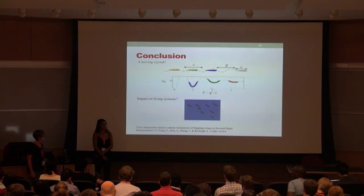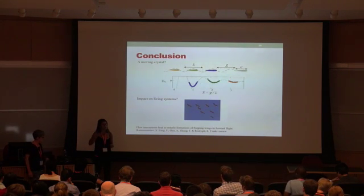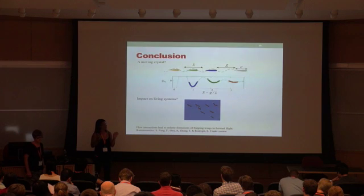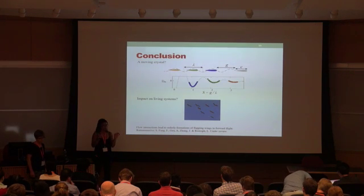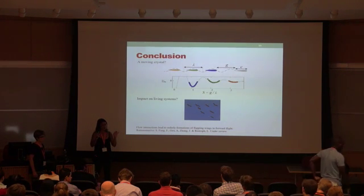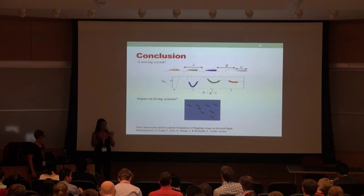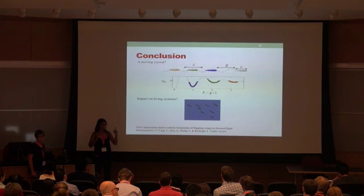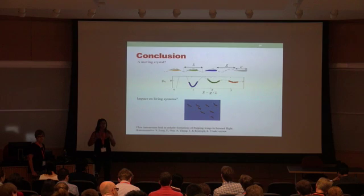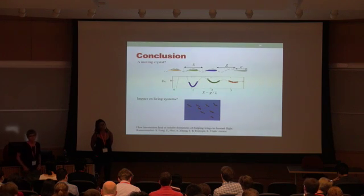I think if you change the motion that you impose to the wing, you kind of change the shape of the wake that you leave behind. But the distance in between two vortices is always going to be set by the landscape of your flow structure. So I think it's going to always correspond to the distance between two vortices, no matter what is the motion that you impose to the wing. But maybe that distance is going to change depending on the type of driving you impose. That's my guess.